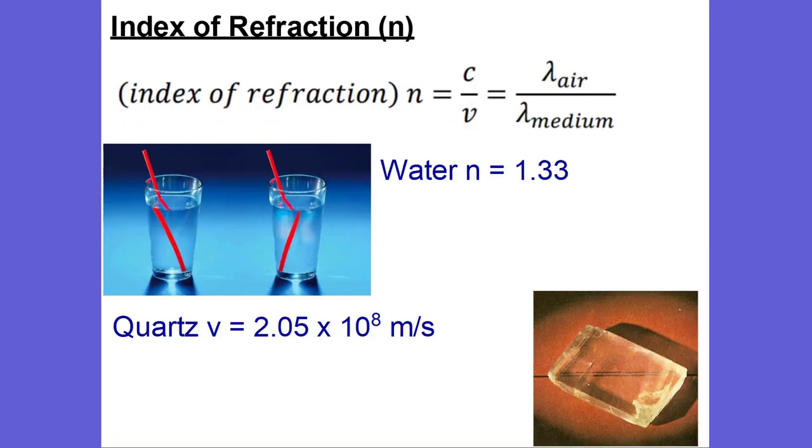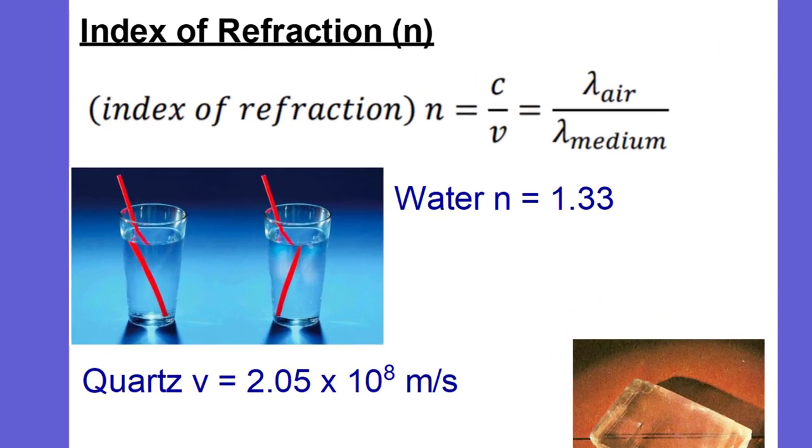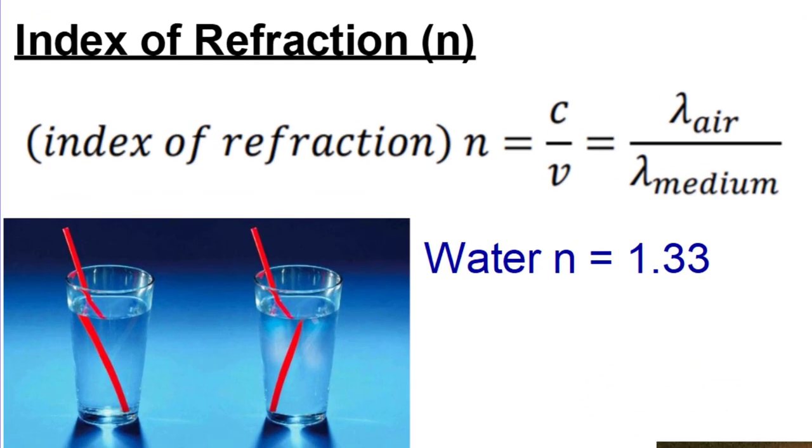We also have a thing called the index of refraction. You can see our equation here for the index of refraction. Our variable for the index of refraction is this n. And n is equal to the speed of light, that's c, over the velocity, or the wavelength in air over the wavelength in medium. Because obviously the frequency stays the same and the frequency is canceled out.